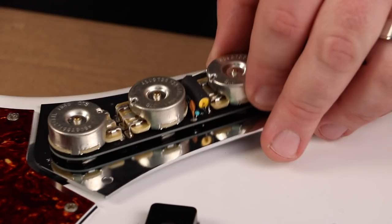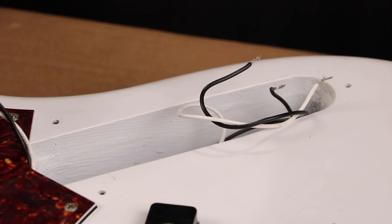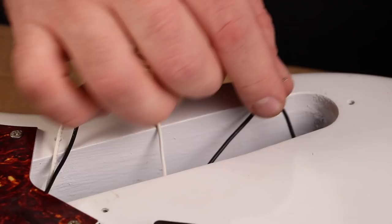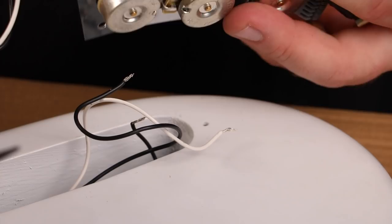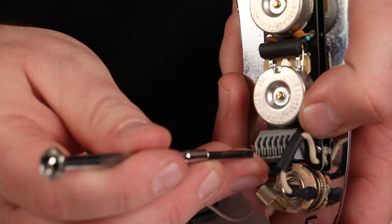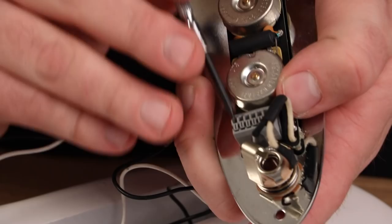So this is going to be the hot and ground that go to the neck pickup. This is the hot and the ground that go to the bridge pickup. And this is our ground. So we're going to grab our flathead screwdriver and by depressing these little switches right here it's going to open the teeth up and then we're just going to push the cable right into this hole.